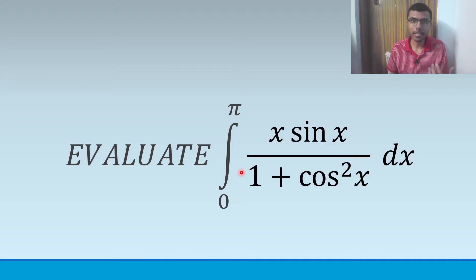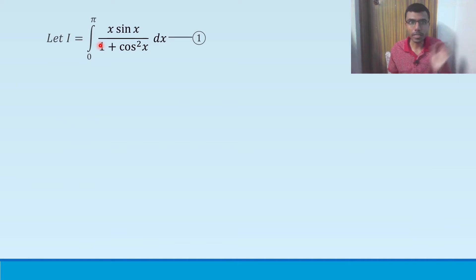Here I need to find out the integral of 0 to pi, x sin x by 1 plus cos square x dx. I am going to go slow because I know that many of you find this chapter a bit tough. So please listen to me. First take the given integral as I. Let I equals this and mark it as equation 1. This is the first step.